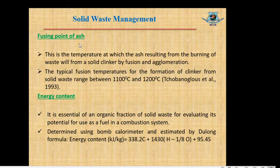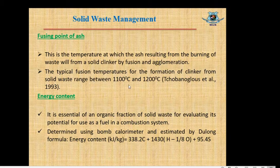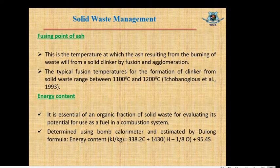Fusion point of ash. This is the temperature at which the ash resulting from the burning of waste will form a solid clinker by fusion and agglomeration — that is, the temperature at which no solid waste remains as raw material and all solid waste is transformed into ash. Generally, the typical fusion temperature for the formation of clinker from solid waste ranges between 1100°C and 1200°C, within which fusion completely occurs.